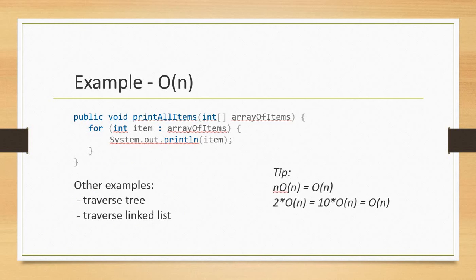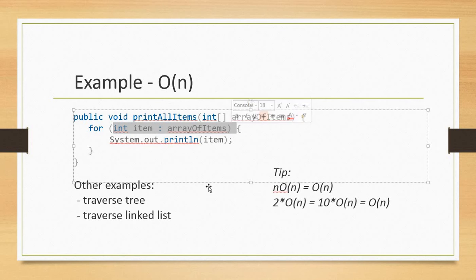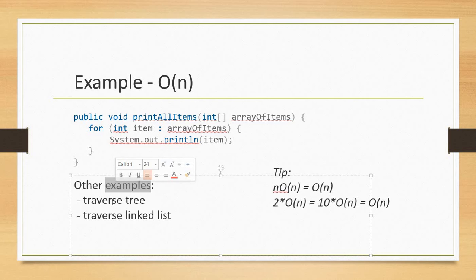Here is an example of O(n). Let's say we have a given array and we're looping through this array. In this case, if we have 10 items in the array, then we're going to access 10 items. If we have millions of items in this array, then we're going to print millions of times. So it's O(n). Other examples of O(n) are traversing a tree or traversing a linked list.